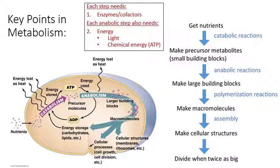Some of those enzymes also have cofactors that they need — just an extra molecule they need to work. For the anabolic steps in metabolism, those need energy as well, so they need both the enzymes and energy, usually in the form of ATP. Sometimes a different type of energy source is used — for instance, plants would use light for certain anabolic reactions.